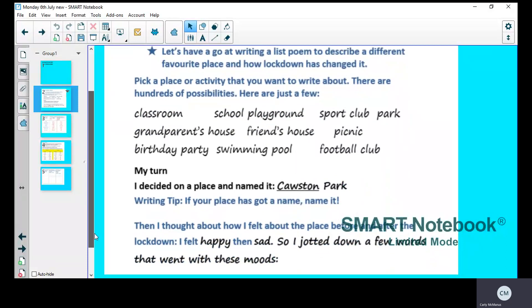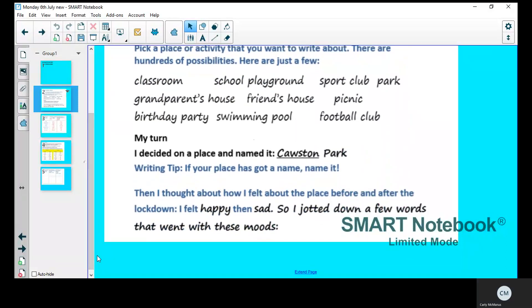Now obviously I chose a park to write about and I just named the park and called it Causton Park. So if you're writing about a swimming pool you might say the Gala Baths or if it's a birthday party, Tom's birthday party. So try and give it a name. Then I thought about how I felt about that place before and after lockdown. So I felt happy then sad. Before lockdown all these places had a positive atmosphere, they're very happy places, and then after lockdown or during lockdown they had quite a sad atmosphere.